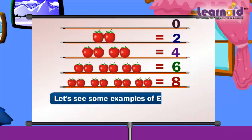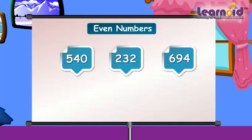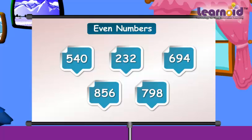Let's see some examples of even numbers. Let's check. The last digit in these numbers is 0, 2, 4, 6, 8 — so these numbers are even.